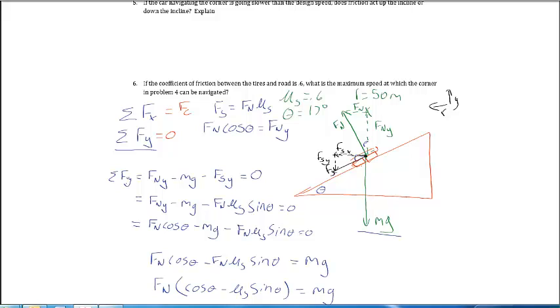We know the radius is 50 meters from before and the angle is 17 degrees. Anytime you have a problem like this, the best thing to do is to find all the forces that act. Remember, when anything is moving in a circle, the net force is going to be the centripetal force. So that's what I have written over here. The net force in the x direction is actually the centripetal force that causes it to move in the circle. The net force in the y direction is equal to 0 because the car does not move up or down the incline.